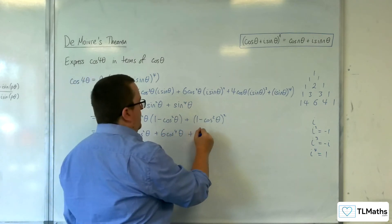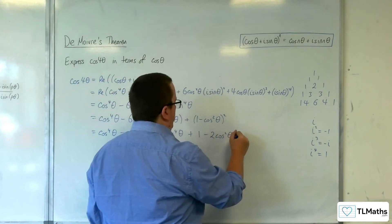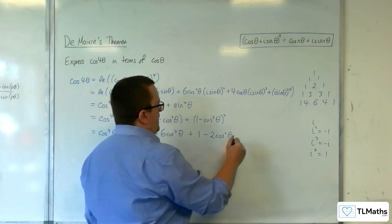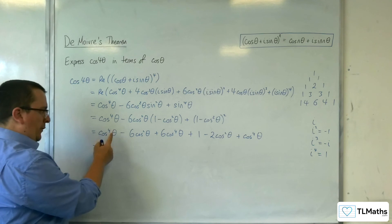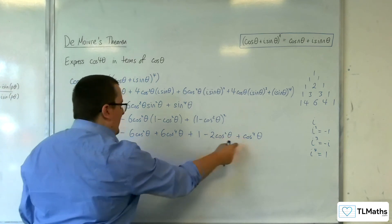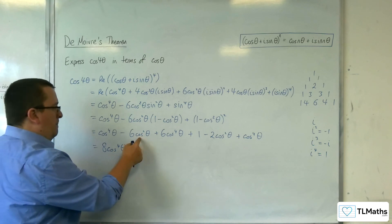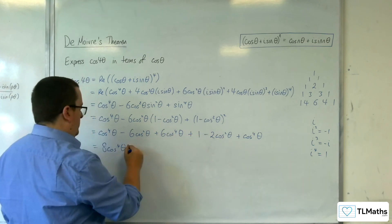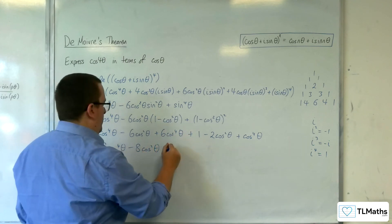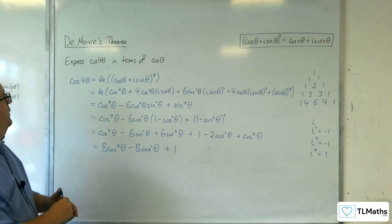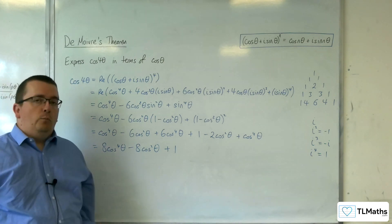Now for this one, we're going to get 1 minus 2 cosine squared theta plus another cosine to the 4 theta. So we've got cosine to the 4 theta, minus 8 cosine squared theta, and plus 1 on the end. And so that's how we can express cosine 4 theta in terms of cosine theta using De Moivre's theorem.